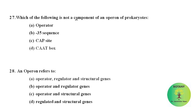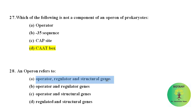Which of the following is not a component of an operon in prokaryotes? In prokaryotes, the operator, -35 sequence, and CAP site are present, but the CAAT box is not present in prokaryotes — the CAAT box signals the binding site for RNA transcription factors and is present in many eukaryotic promoters but absent in prokaryotes. An operon refers to the operator, regulator, and structural genes.